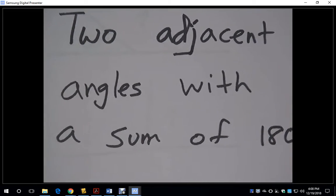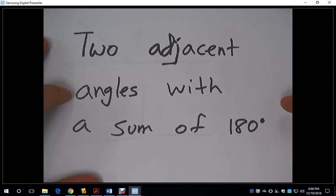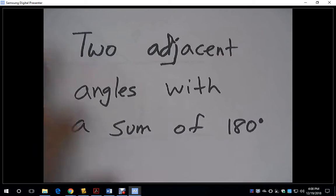What does adjacent mean? Adjacent means next to. So we're looking at two angles that are next to each other that sum up to 180 degrees.